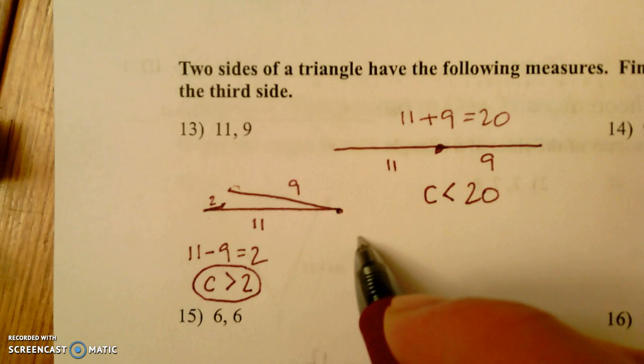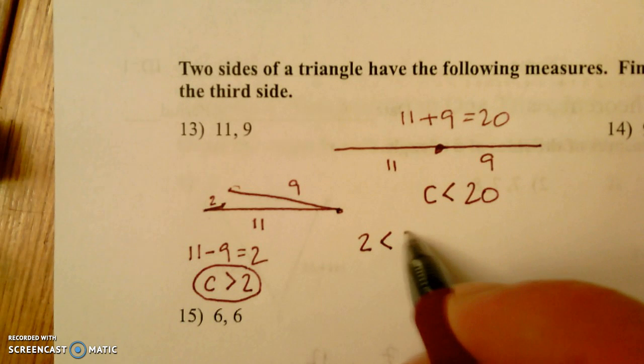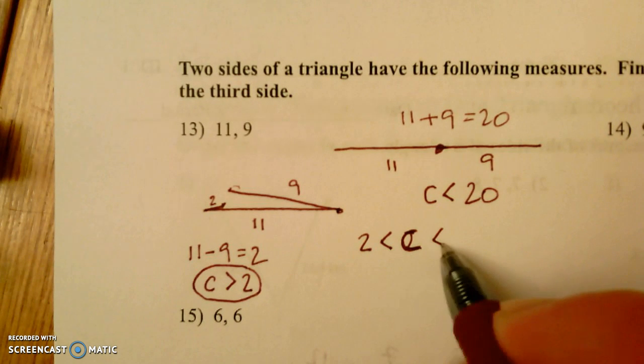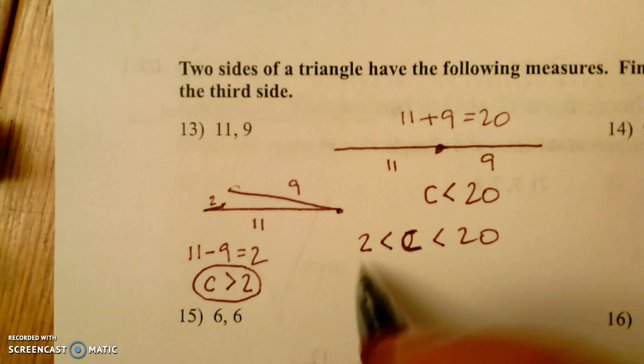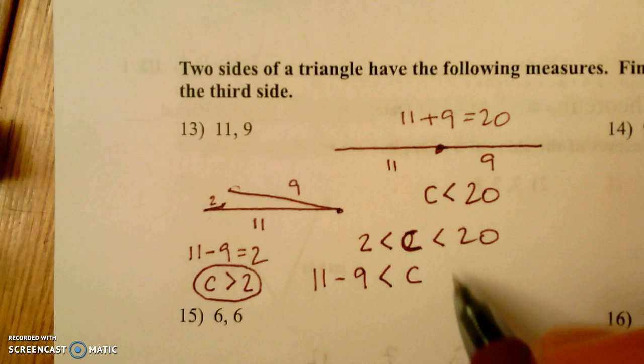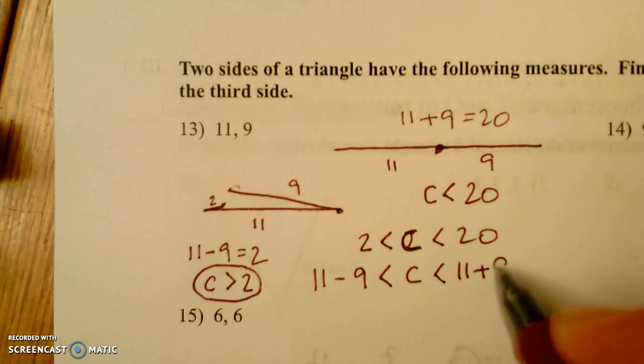Overall, c would have to be greater than 2 and less than 20, and we got the 2 by going 11 minus 9 is less than our third side c, which is less than 11 plus 9.